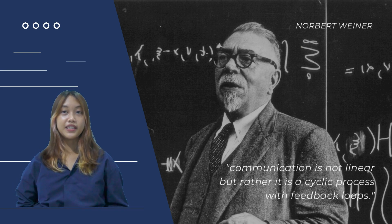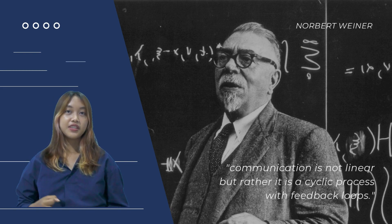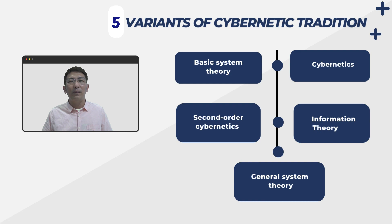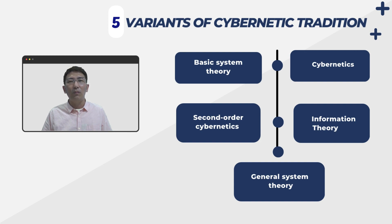Theories in the cybernetics tradition explain how physical, biological, social, and behavioral processes work. There are five variants of the cybernetics tradition. The first is basic system theory, which describes systems as actual structures that can be analyzed and observed from outside, where we can see parts of a system and how they interact. The second is cybernetics by MIT scientist Norbert Wiener in the 1950s.